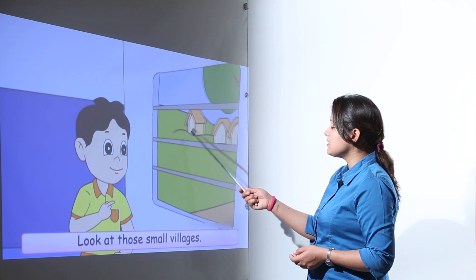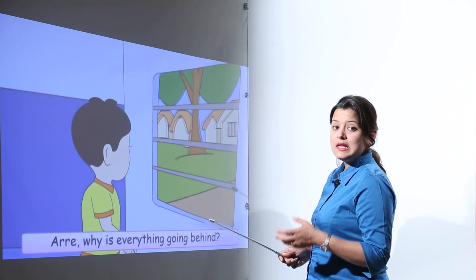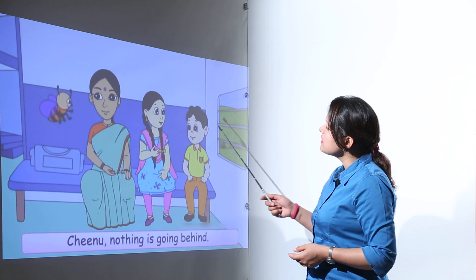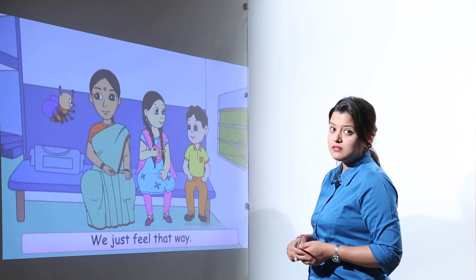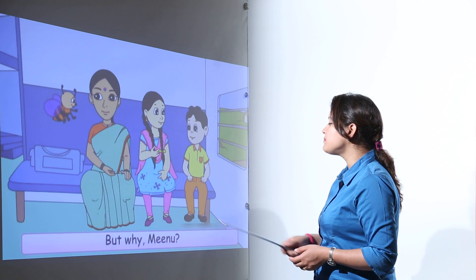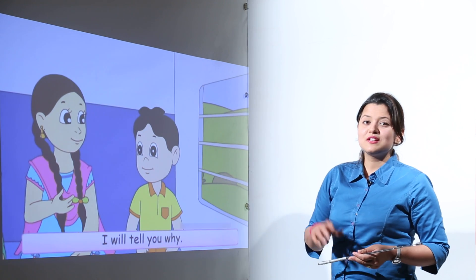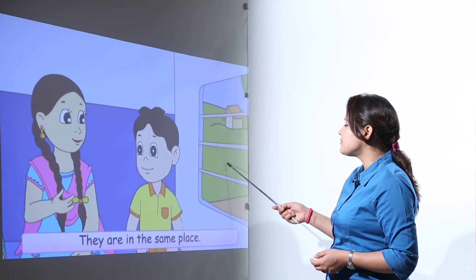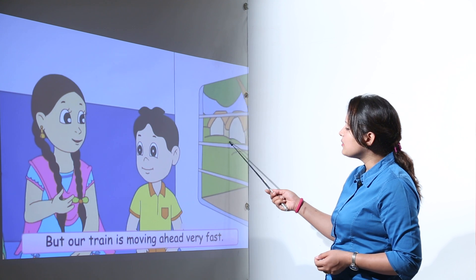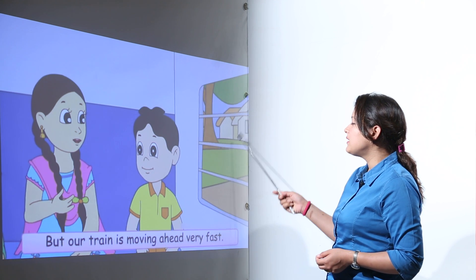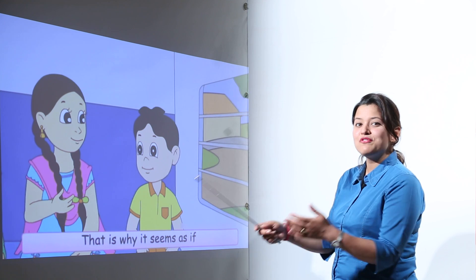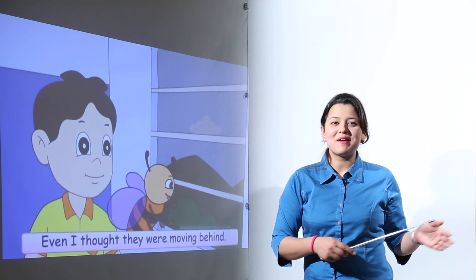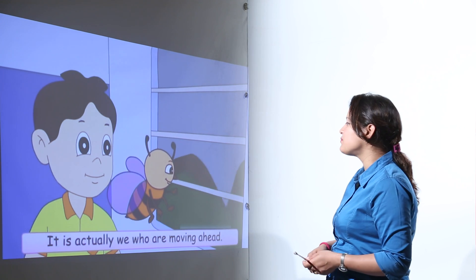When the train started moving, you can see so many places just passing by. Tinu is wondering why is everything just moving behind. Minu explains it is not like that, it is not going backwards. When we are looking outside the window, the things are looking like they are moving back, but they are not moving back. Our train is moving forward, that is why the things are appearing as if they are going back. It is the train that is moving forward.